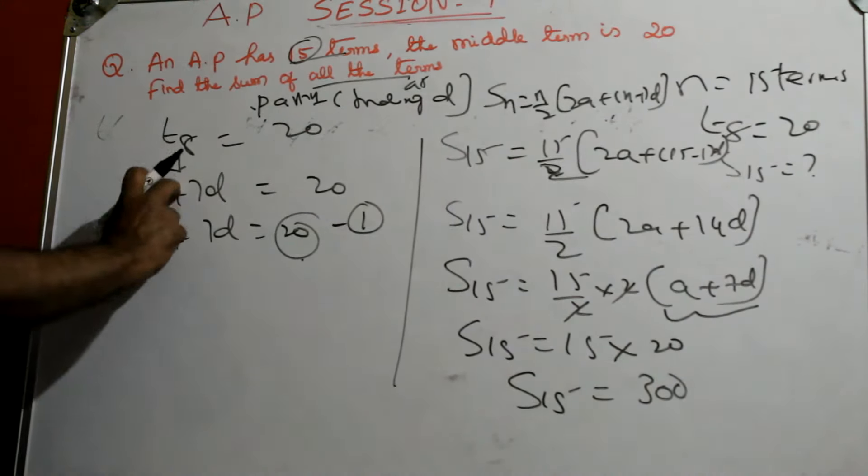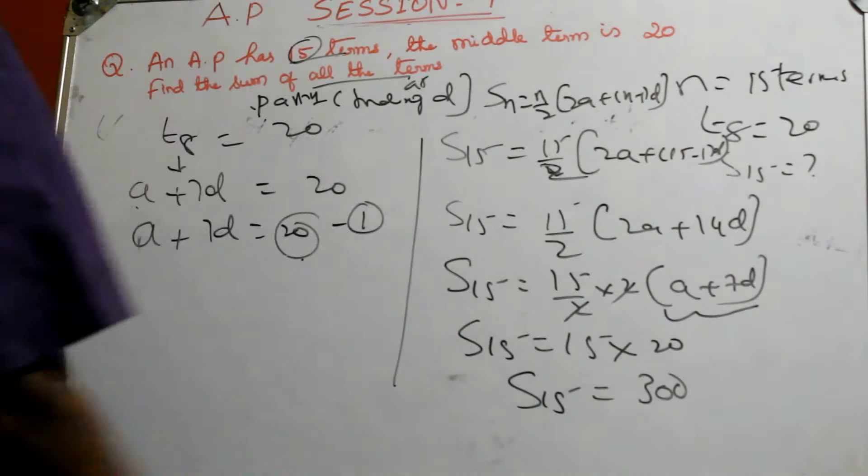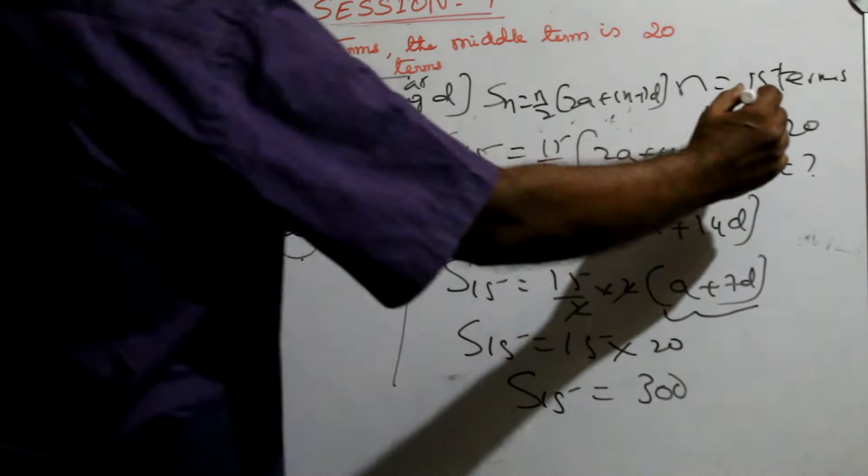T8 is 20, you get A plus 7d is 20. A plus 7d is 20. We don't know A and D. Now S15, you write the formula. And because n is given as 15, so wherever n comes, 15.